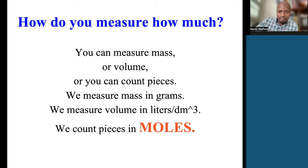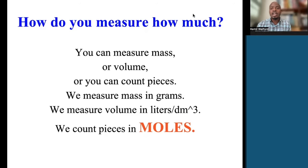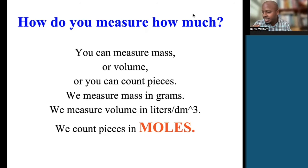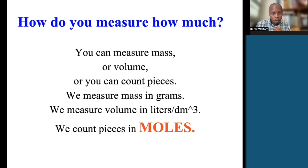In everyday life, when you have a dozen things, you have 12 entities. Now we need to understand how many things we have when we have one mole. When you have one dozen, you have 12 entities — so when you have one mole, how many things do we have? Let's look at that.